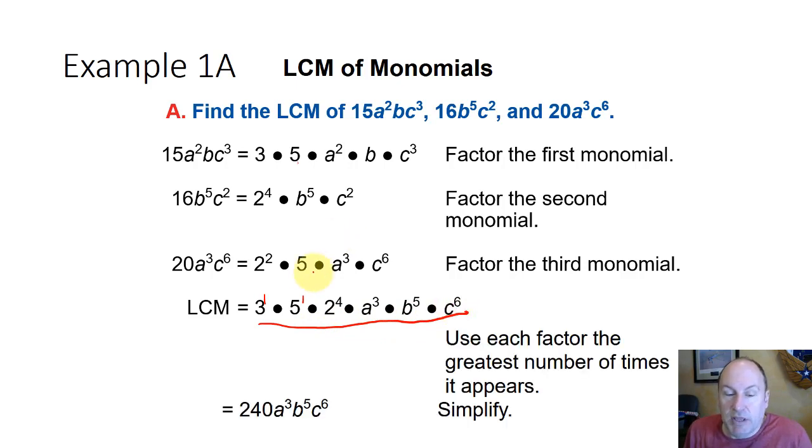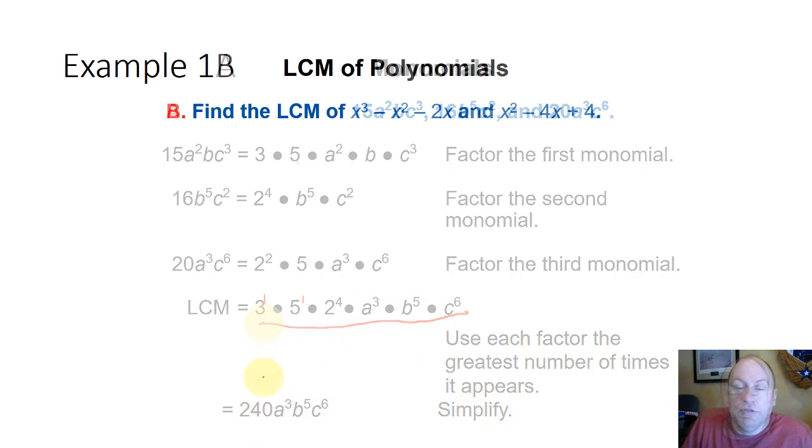And when we multiply them together, we get 240 a to the third b to the fifth c to the sixth.